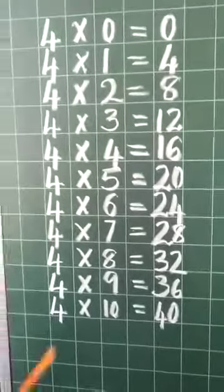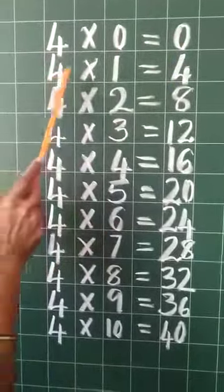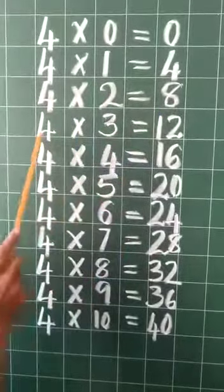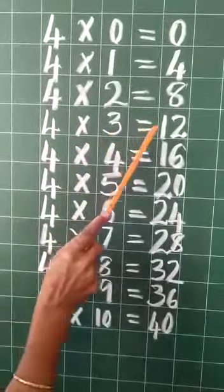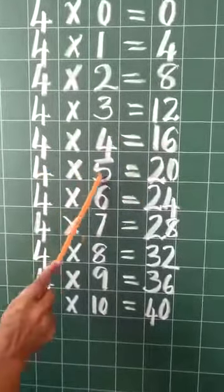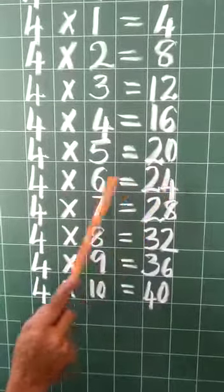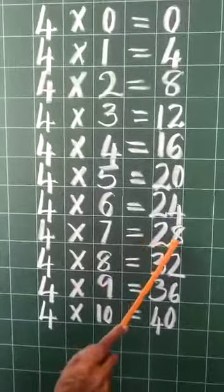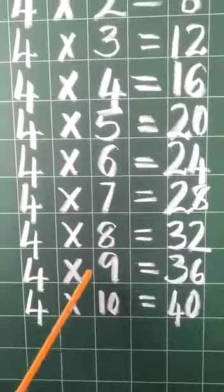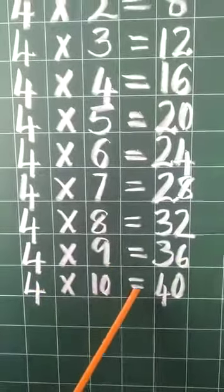Once again I will read for you. 4 zeros are 0. 4 ones are 4. 4 twos are 8. 4 threes are 12. 4 fours are 16. 4 fives are 20. 4 sixes are 24. 4 sevens are 28. 4 eights are 32. 4 nines are 36. 4 tens are 40.